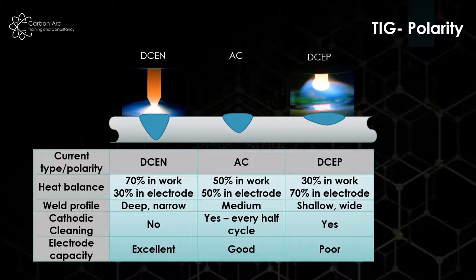Then we have straight DC positive, so most of the heat is always in the electrode. We're not getting heat in the workpiece, so our penetration drops but the arc gets wider. It has very poor electrode capacity because now it's just melting, and you can see on the picture that it's doming over and not really behaving how we would expect it to.